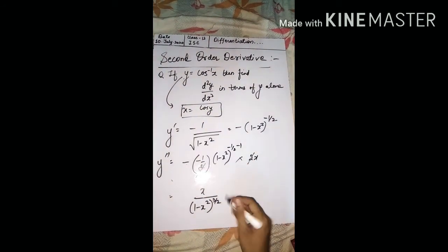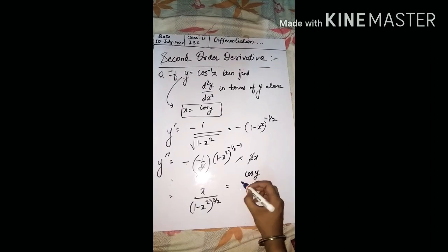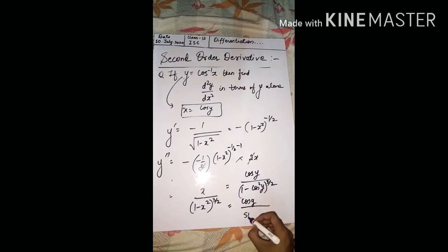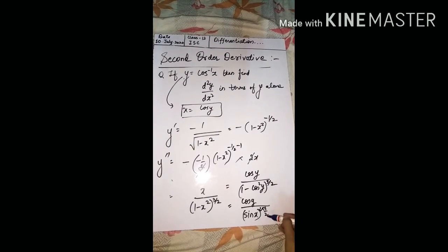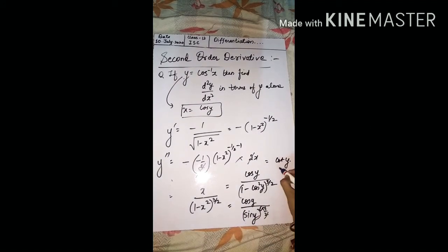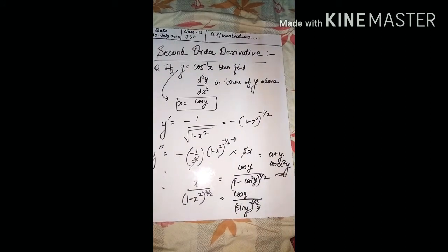Now put x = cos(y). So we get cos(y) / (1 − cos²y)^(3/2). We know that 1 − cos²y = sin²y. So (sin²y)^(3/2) = sin³y, since the square and the 3/2 power combine: 2 and 2 cancel giving sin³y. So cos(y)/sin³y = cot(y)/sin²y = cot(y)·cosec²y. You have found the answer in terms of y alone.